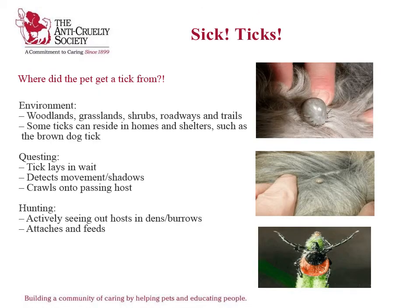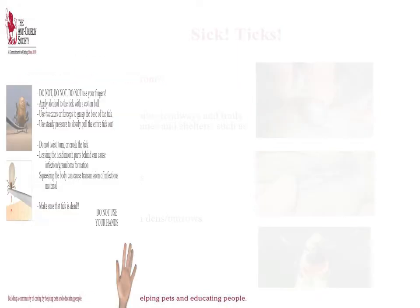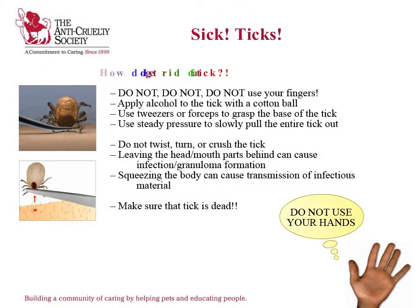Animals get ticks from environments like woodlands, grasslands, and shrubs. Ticks detect movements and shadows and crawl onto passing hosts. When removing a tick from your animal, you should never use your fingers. You should apply alcohol and use tweezers to pull the entire tick out. Do not twist, turn, or squeeze when removing a tick.